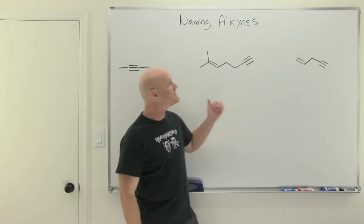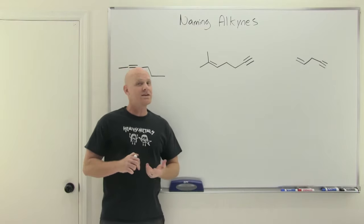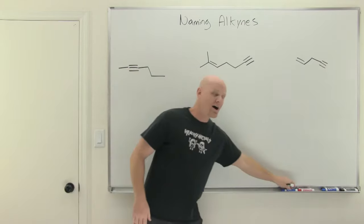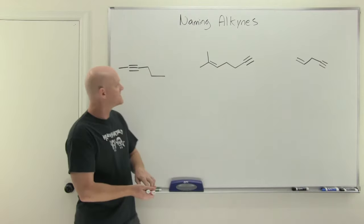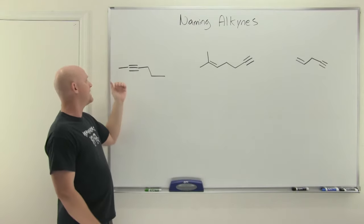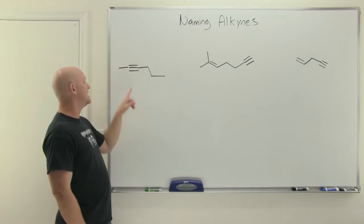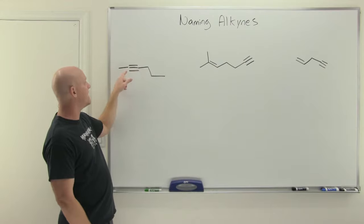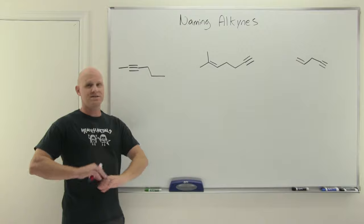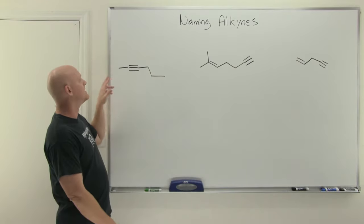Let's name some alkynes. We'll find a similar pattern to naming alkenes. First find your longest continuous carbon chain that the alkyne is part of. In this first example, the entire chain is part of that alkyne. What's nice about alkynes compared to alkenes is there's no such thing as cis and trans. The carbons in the alkyne are SP hybridized, so the bond angles are 180 degrees, meaning two different geometries like cis and trans aren't even possible. There's no E and Z, no cis and trans.